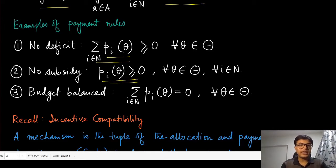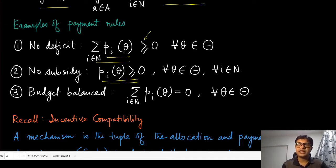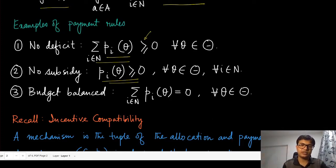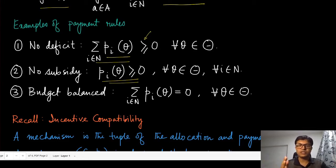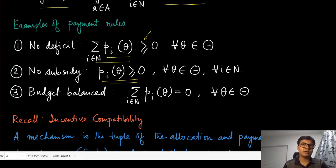The third property is budget balance: the no-deficit condition is met with equality, meaning the sum of payments is exactly zero. Someone pays a certain amount and someone else gets paid, but the total net transfer is zero. This is desirable in settings where you don't want large amounts of money taken away to run the mechanism — instead, payments from some agents are redistributed among other agents.